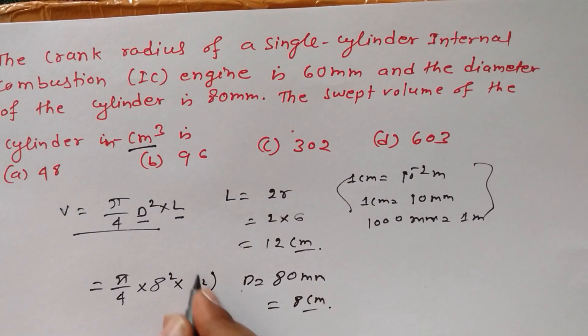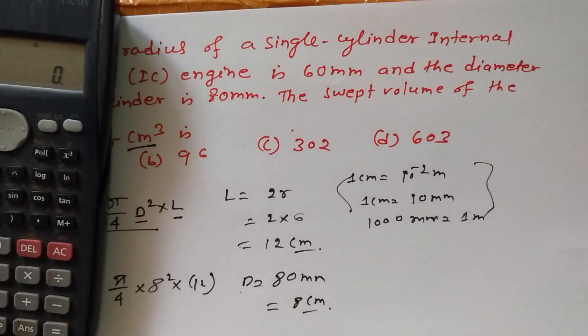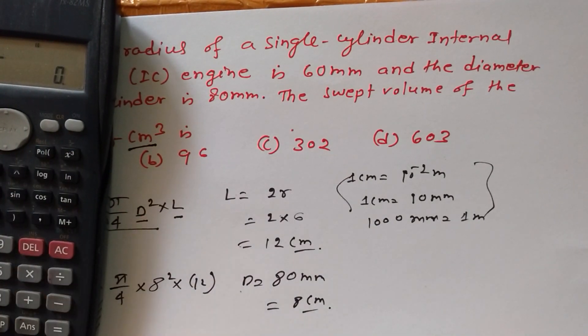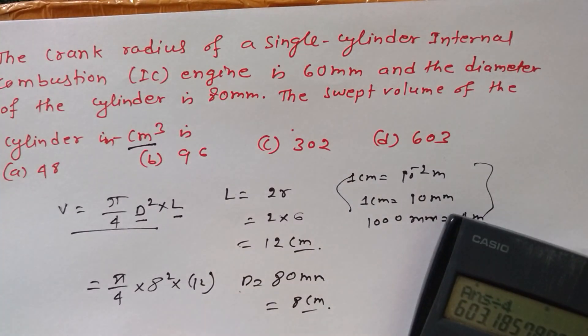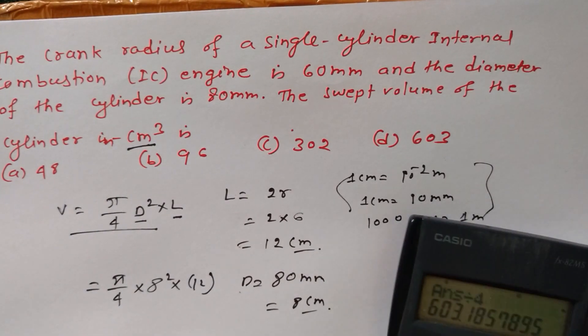Now pi into 8 square into 12 divided by 4. So the answer is 603.185 centimeter cube.